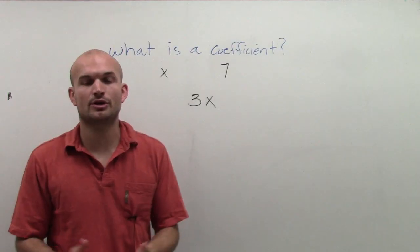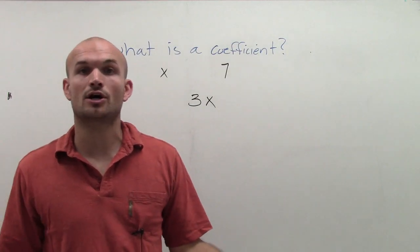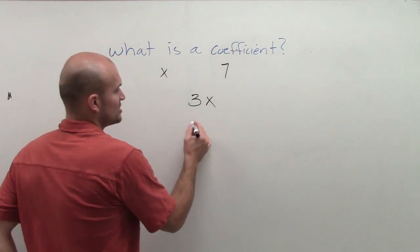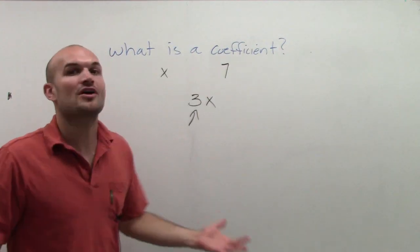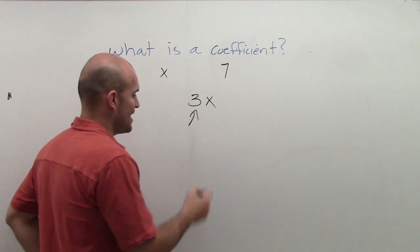So the coefficient is going to be your numeric factor of that term, which is pretty much the number in your term. So that's going to be 3x.